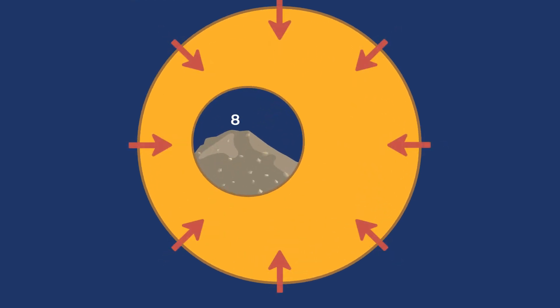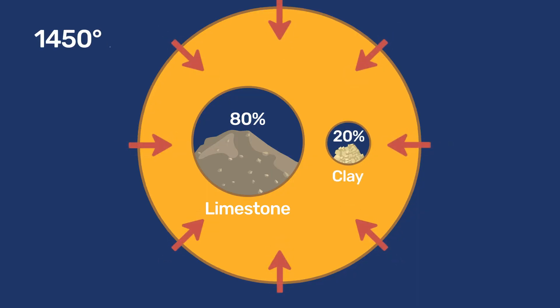Portland cement is produced by burning a mixture of 80% limestone and 20% clay at around 1450 degrees Celsius.